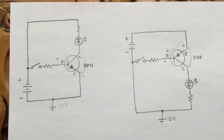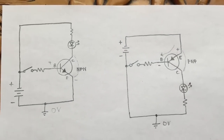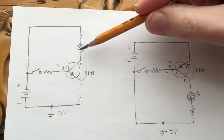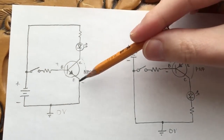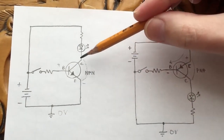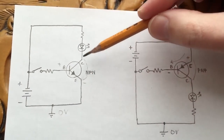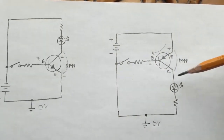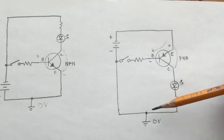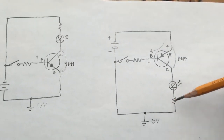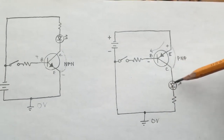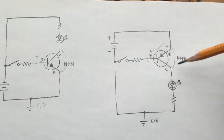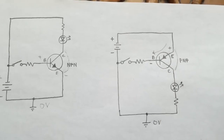These two circuits are very similar. With the NPN transistor, we're connecting the LED to the battery's negative terminal — the switch is on the negative side. In the PNP transistor, the LED stays connected to the negative terminal at all times, and we're switching the positive side of the battery to the LED.